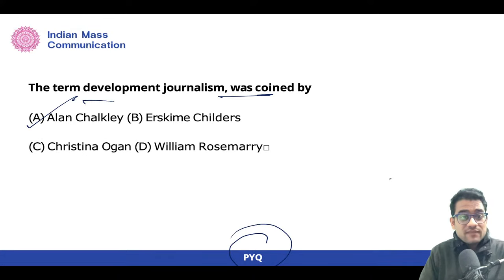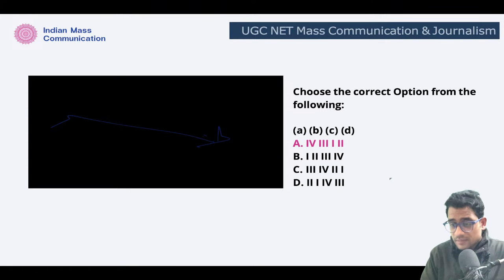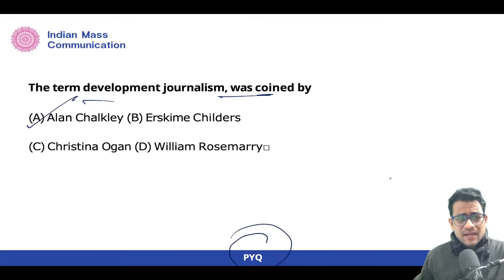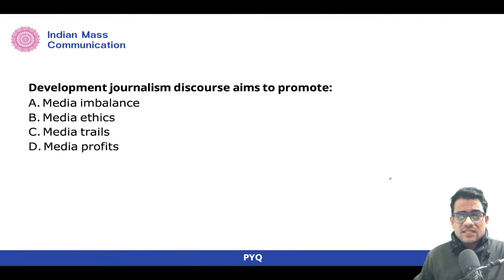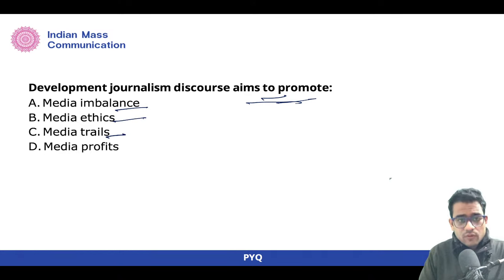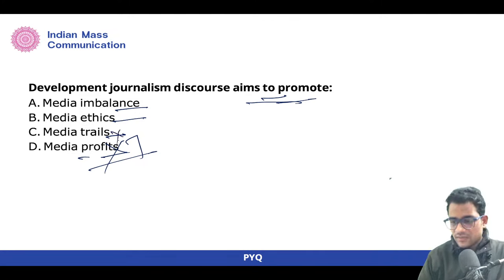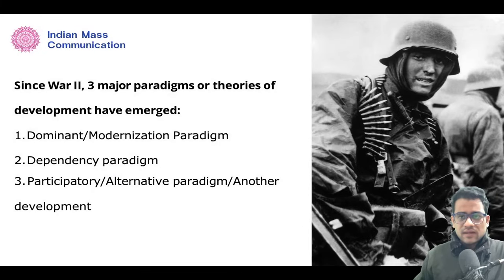There's another question: 'Who gave the concept of development communication as art and science?' — see the phrase 'art and science,' so it has to be matched with Nora Quebral. Remember this. Then: 'Development journalism discourse aims to promote — media imbalance, media ethics, media trials, or media profits?' Media trials is a negative connotation and media profits is not the main motive of development journalism. The right answer is media ethics.